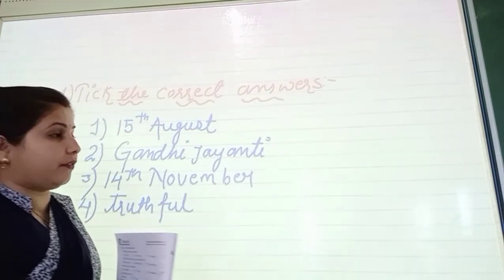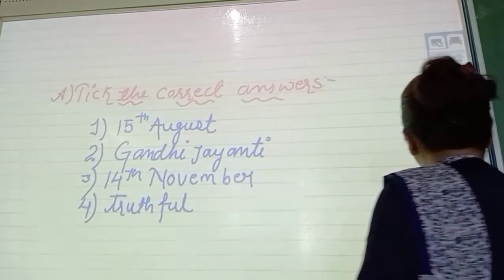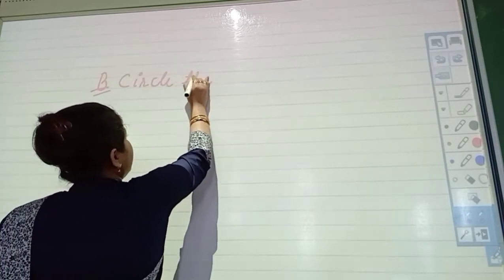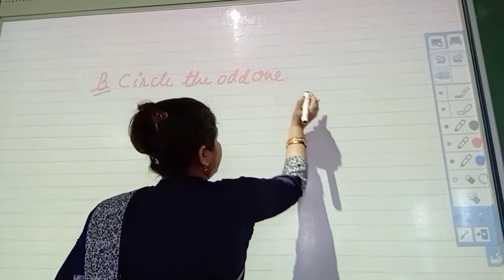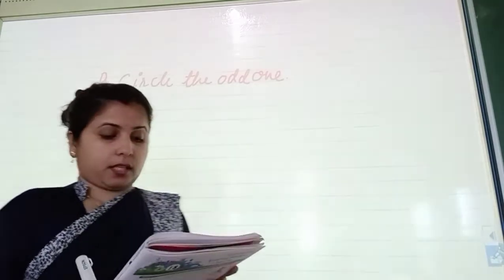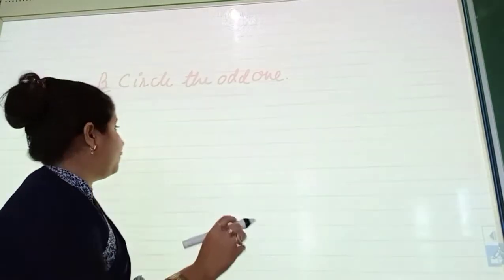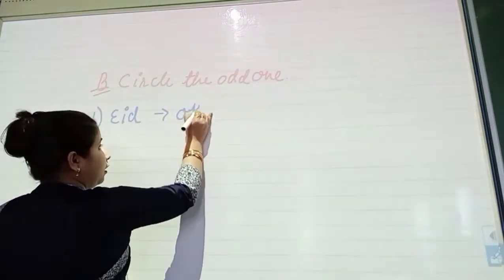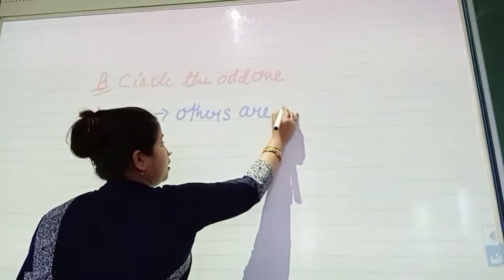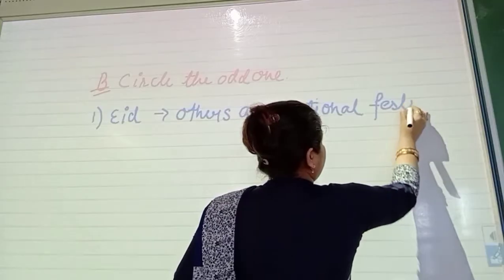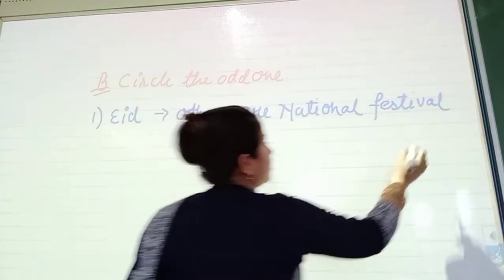Now we are going to circle the odd one out. First one: Independence Day, Republic Day, Gandhi Jayanti, Eid — the odd one is Eid. The reason is that the others are national festivals, while Eid is a festival celebrated by a particular religious group. Second one: Diwali, Republic Day, Christmas, Holi — the odd one is Republic Day, because it is a national festival and the rest are religious festivals.